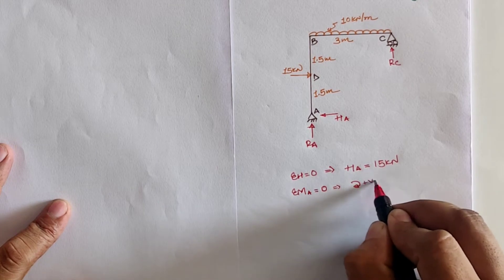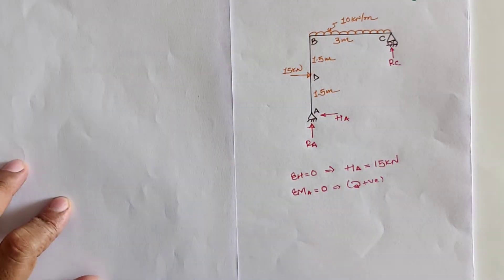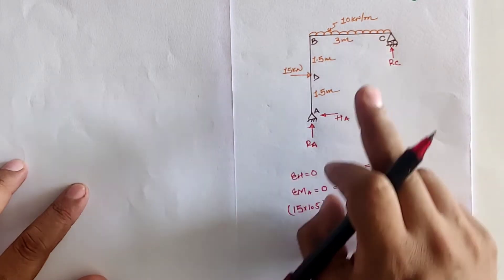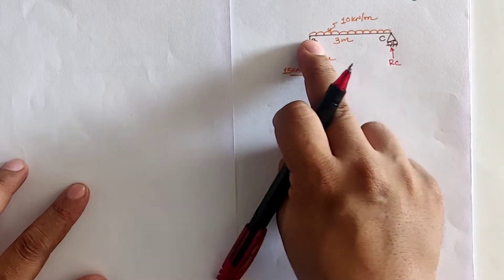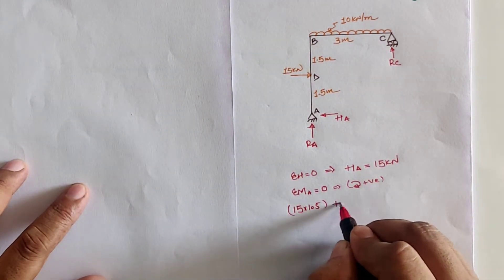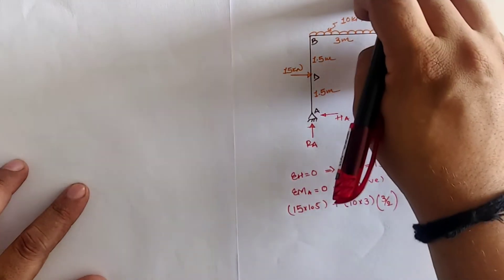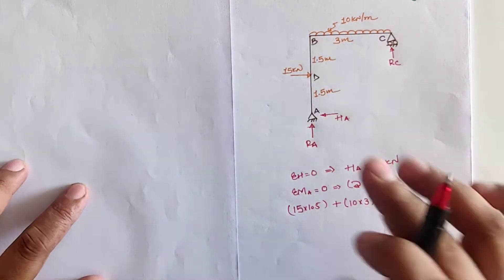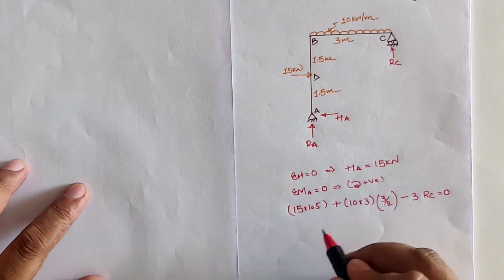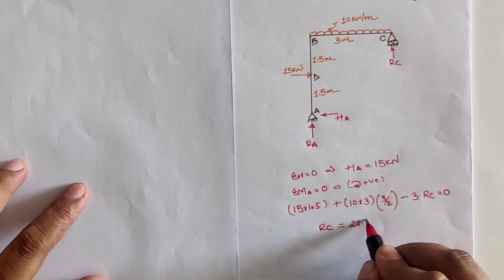Taking moment at location A equal to zero, and assuming clockwise moment as positive: the 15 kilonewton load creates a clockwise moment with perpendicular distance 1.5 meter, giving 15 × 1.5. For the 10 kilonewton per meter UDL, total load is 10 × 3 and the CG distance from A is 3/2, which is also clockwise. RC creates an anticlockwise moment with perpendicular distance 3 meter, so minus 3·RC = 0. Solving gives RC = 22.5 kilonewton.